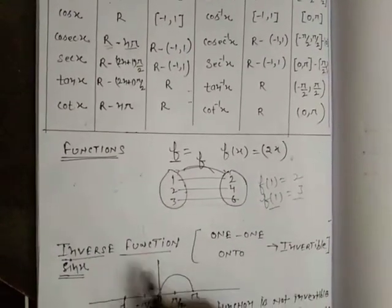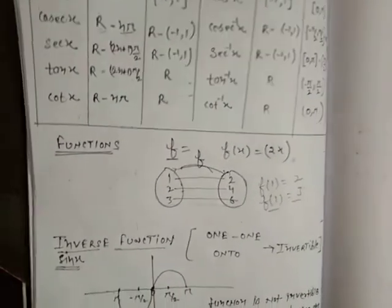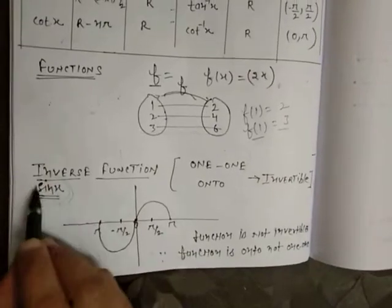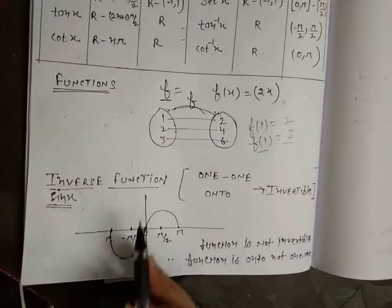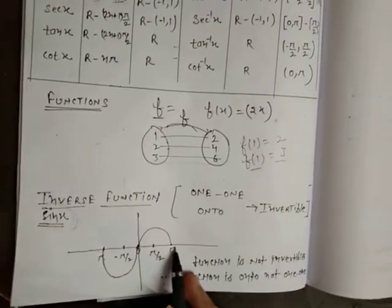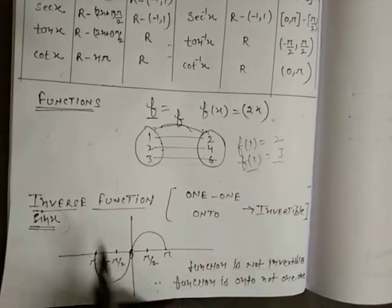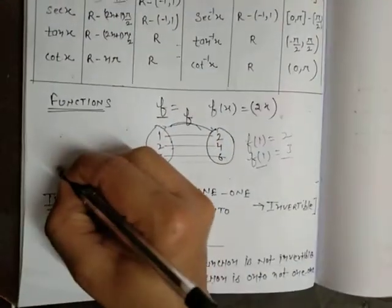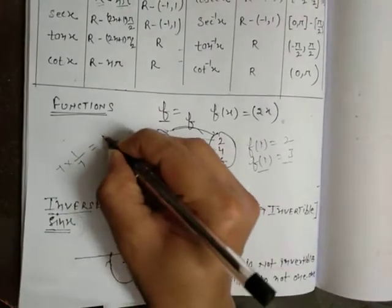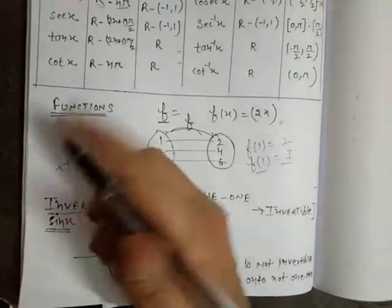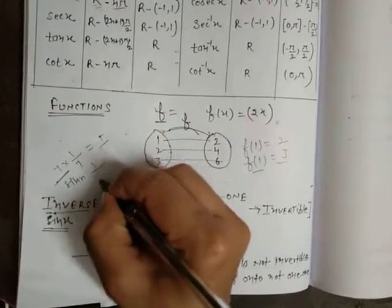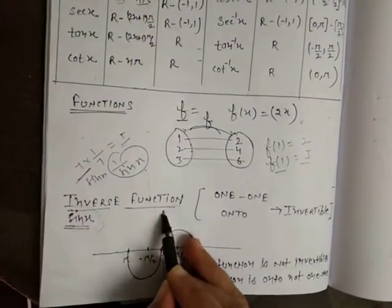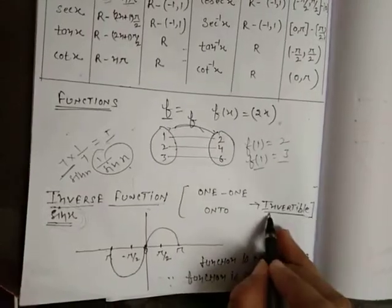The problem comes in the inverse function. The graph shown here is not of the inverse function — it is the graph of sin x. Sin x is a function, but it can have an inverse only for a limited range. An inverse function exists only when the function is invertible. The condition for invertible is that it must be both one-one and onto.